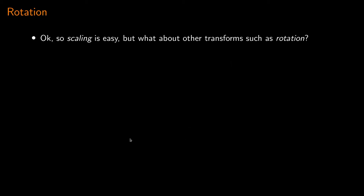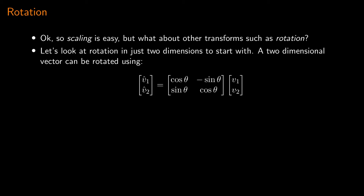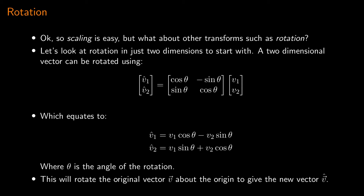Scaling is easy, but what about other transforms such as rotation? Let's look at rotation in just two dimensions. A two-dimensional vector can be rotated using a two-by-two matrix containing cosine theta, minus sine theta, sine theta, and cosine theta. That equates to V-hat-1 equals V1*cos(θ) minus V2*sin(θ), and V-hat-2 equals V1*sin(θ) plus V2*cos(θ), where θ is the angle of rotation.